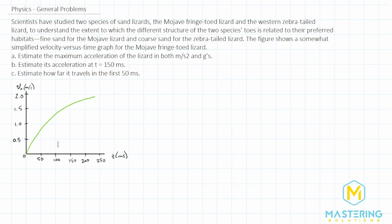They give us this simplified velocity versus time graph for the Mojave Fringetoe Lizard, and they ask us three things. We have to figure out an estimation for the maximum acceleration of the lizard, and they need it in meters per second squared and in g's. We need to find an estimation of the acceleration at time of 150 milliseconds.